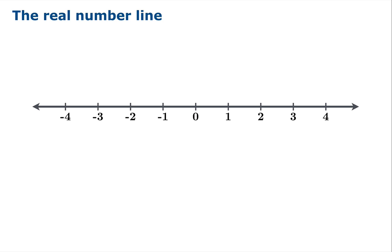We could mark off the integers and identify where real numbers go by looking at their decimal expansions. Each real number corresponds to a point on this line, our good old number line that we've used for many years.